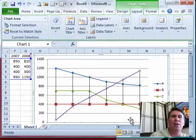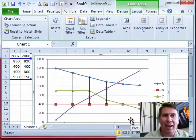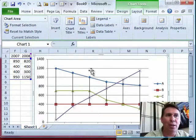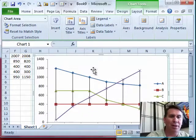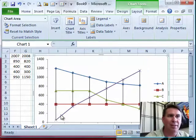We'll add those in. What the High-Low Lines does is, for every single data point, it goes from the highest series down to the lowest series. You know what? Let's get the grid lines here. So it goes from the highest series down to the lowest series.